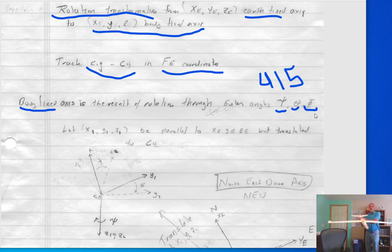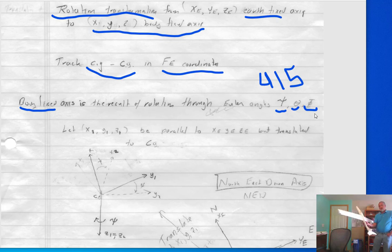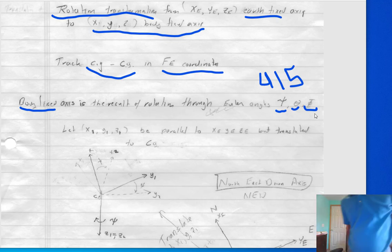Here's the airplane, and you can imagine it pointing north in the earth-fixed axis system. The first thing that happens is the airplane yaws through an angle Psi. Then it pitches through an angle theta, goes up, and then it banks right wing down through an angle phi. That's its X, Y, Z orientation relative to the earth-fixed axis coordinate system. Gravity would be acting straight down, and we need to know how gravity is related to the orientation of the aircraft in the X, Y, Z coordinate system.